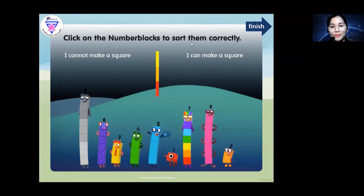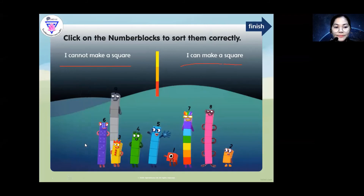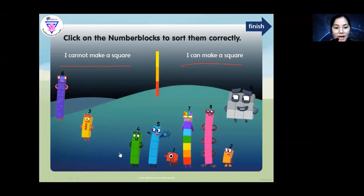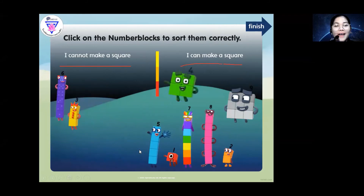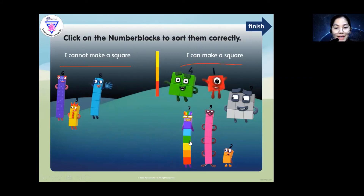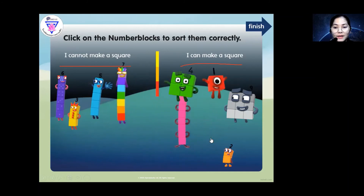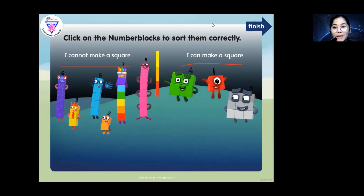Click on the number blocks to sort them correctly. For example, I cannot make a square — you put it there. And I can make a square — you put it here. Number nine: I can make a square. Six: I cannot make a square. Number four: I can make a square. Number five: I can't make a square. One: I can make a square. Number seven: I can't make a square. Number eight: I can't make a square. Number two: I can't make a square. So only numbers one, four, and nine can make a square.